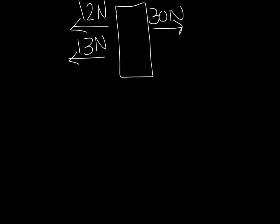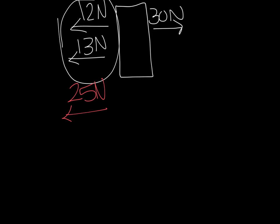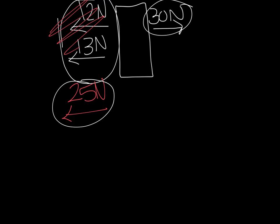On the left side of this rectangle, we have two forces. So we have to combine those first before we can do anything else. What's 12 plus 13? It's 25 newtons. And which direction are they going? They're going to the left. So now we can use 25 newtons and the force on the other side, and we're completely done with those individual forces.